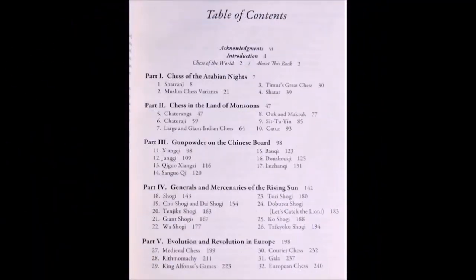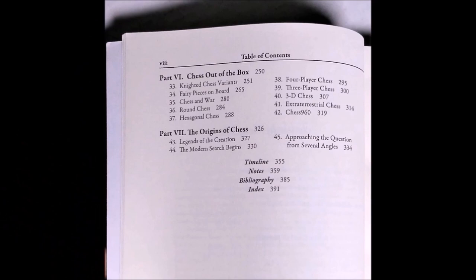The book is in seven parts, examining the Middle East, India through Southeast Asia, China, Japan, Europe, further chess inventions, and finally, the origin of chess itself.